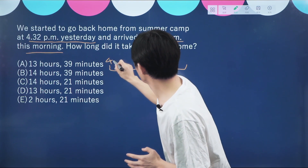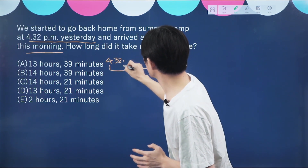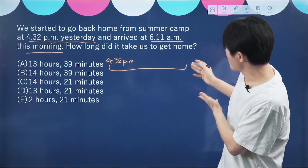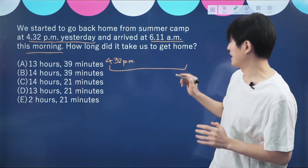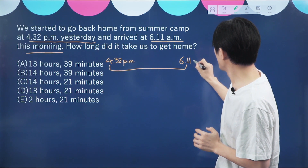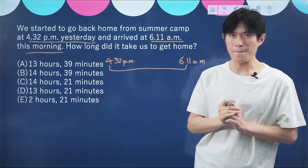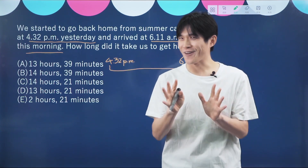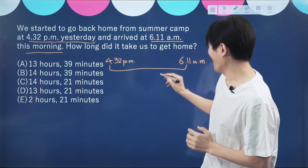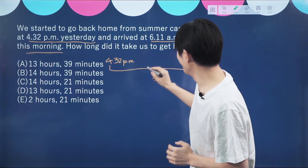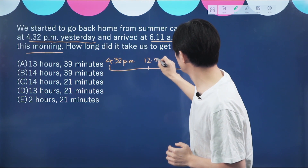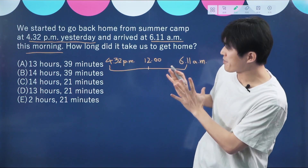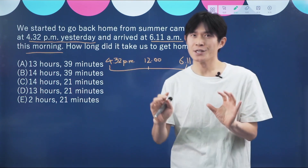4:32 p.m. yesterday and this is the end time, 6:11 a.m. this morning. There is midnight — 12 o'clock — we put it here. Now we need to find the duration from the start time to the end time.